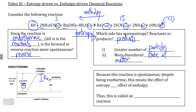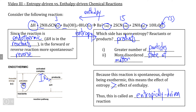Because this reaction is spontaneous even though in the forward direction it's endothermic, we can conclude that the effect of entropy on this reaction is greater than the effect of enthalpy. For that reason, we can consider this to be an entropically driven reaction, as opposed to an enthalpically driven reaction, of which most exothermic reactions are.